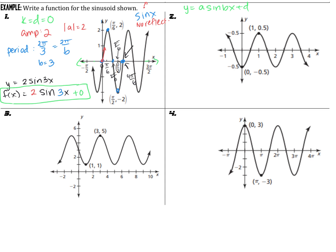Let's look at number 2. The first thing we do is identify the center, which is Y equals 0. Then we determine the amplitude — from the center we go up 0.5 or down 0.5, so the absolute value of A is one half, and D is 0.